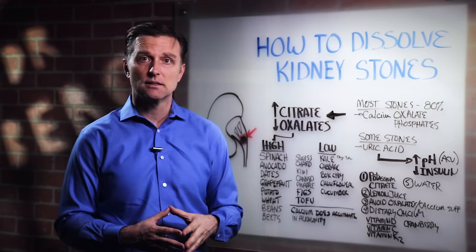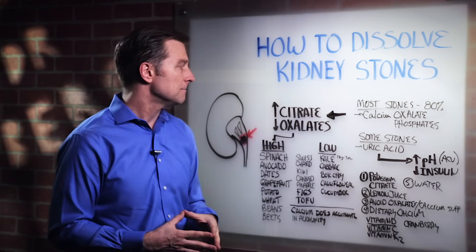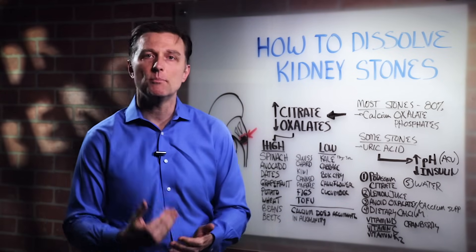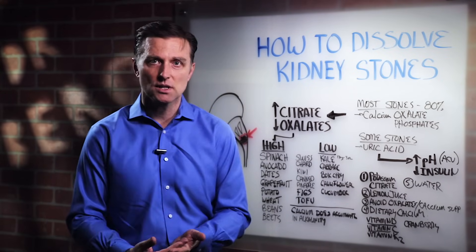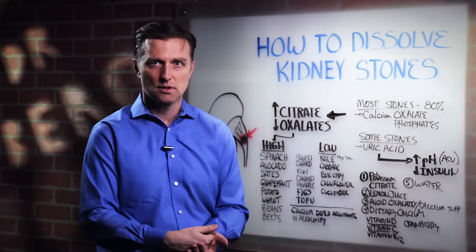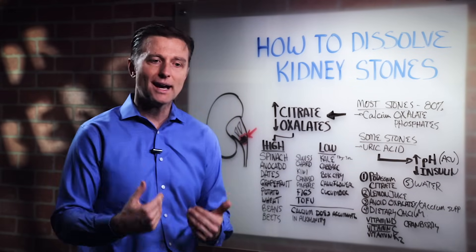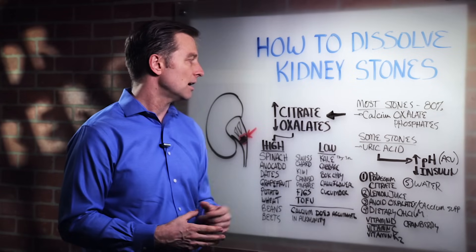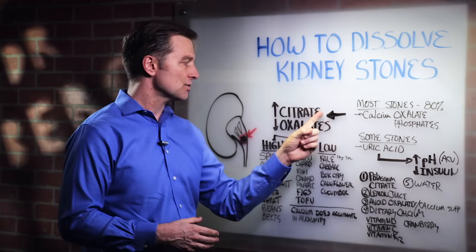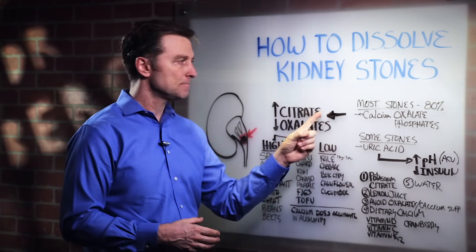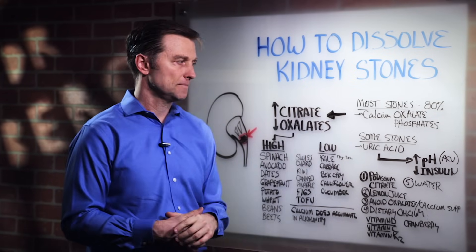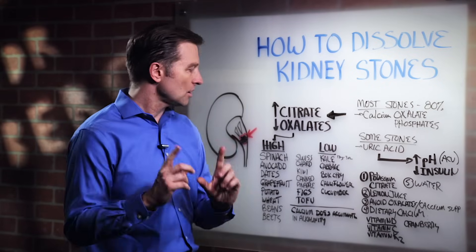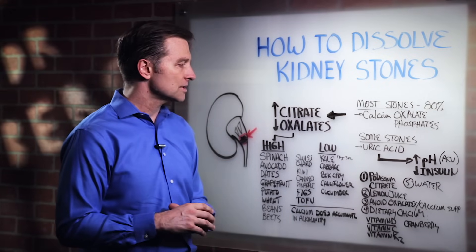Citrates actually help prevent the formation of stones and help dissolve stones. So the two mechanisms you want to focus on are increasing citrates in the diet and decreasing oxalates. Let's go through step one.